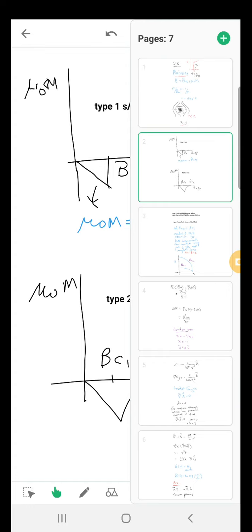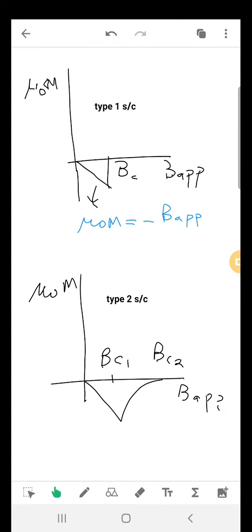There are two types of superconductors. Type 1 superconductors are where the superconductivity vanishes as soon as the applied magnetic field crosses the critical value of magnetic field.